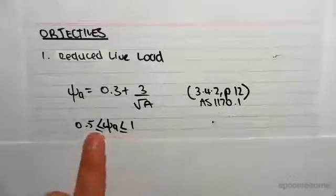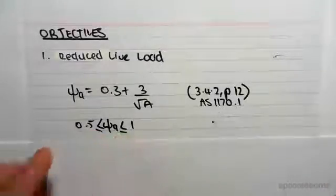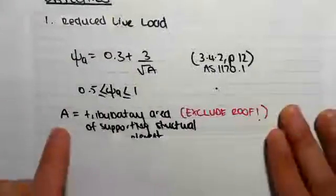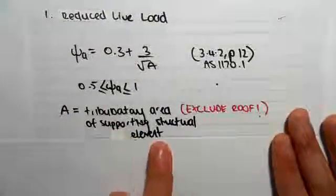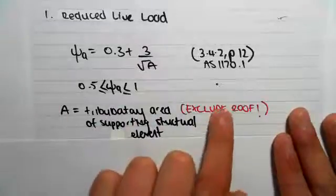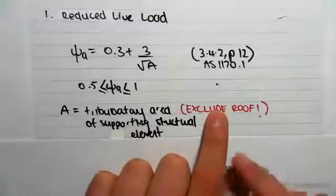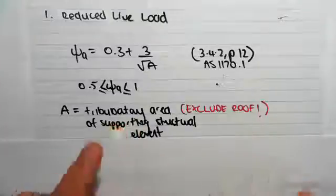ψₐ has to be between 0.5 and 1. A is the attributed area of supporting structural elements. It's important to say that this area must exclude the roof. You can't include the area of the roof in this live load reduction.